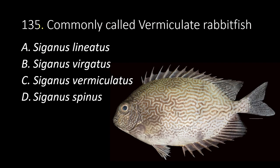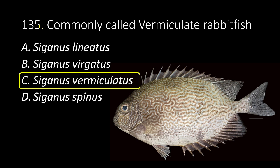135. Commonly called vermiculate rabbit fish. A. Siganus lineatus. B. Siganus virgatus. C. Siganus vermiculatus. D. Siganus spinus. The answer is C, Siganus vermiculatus.